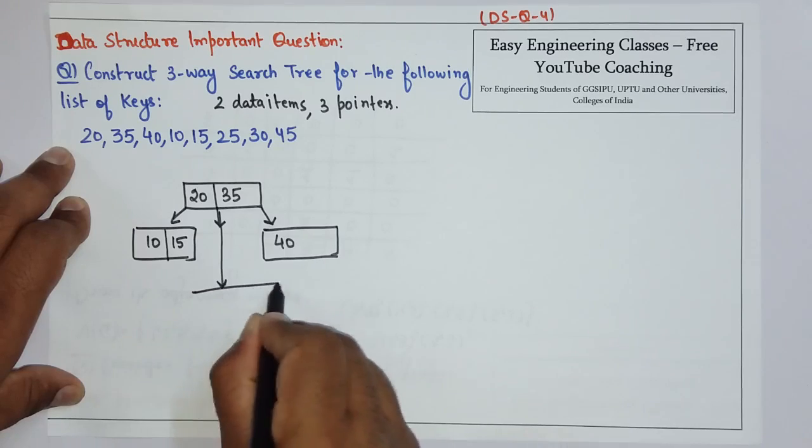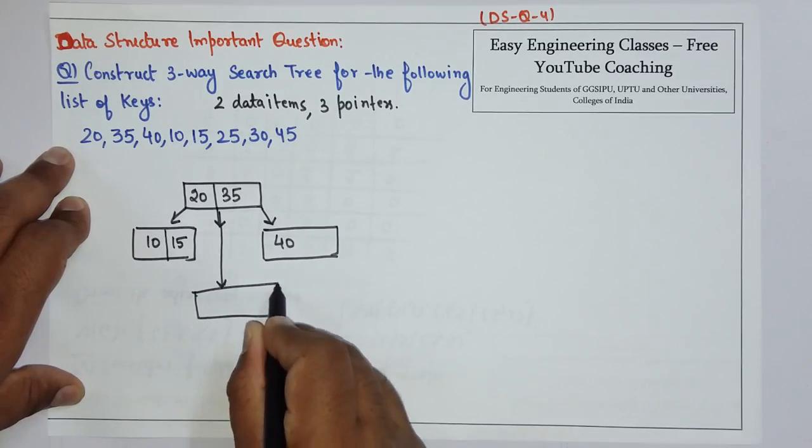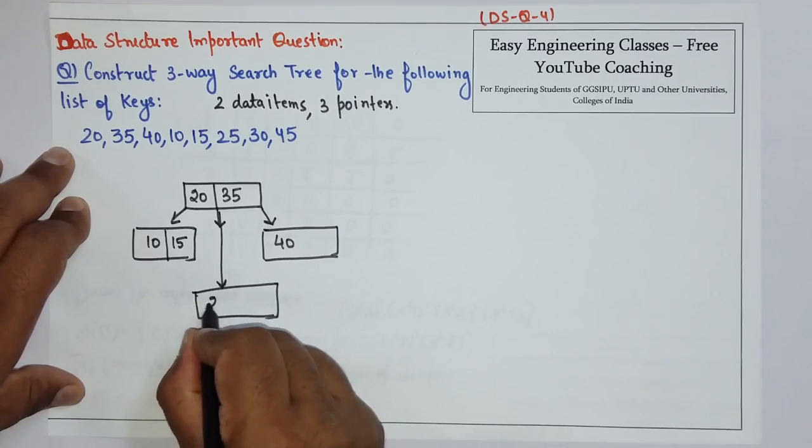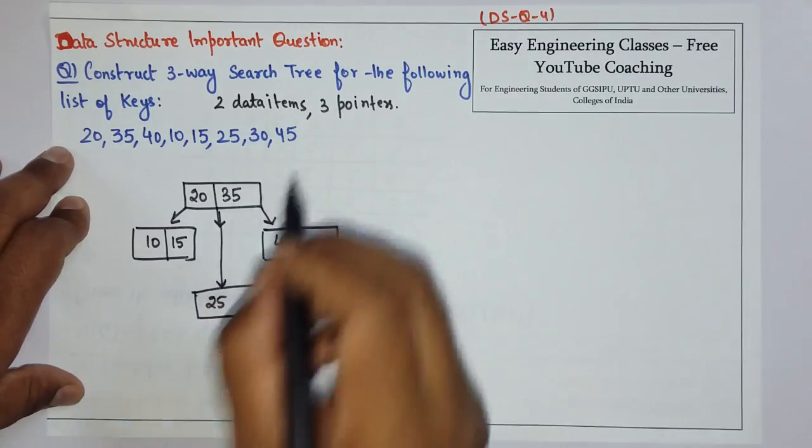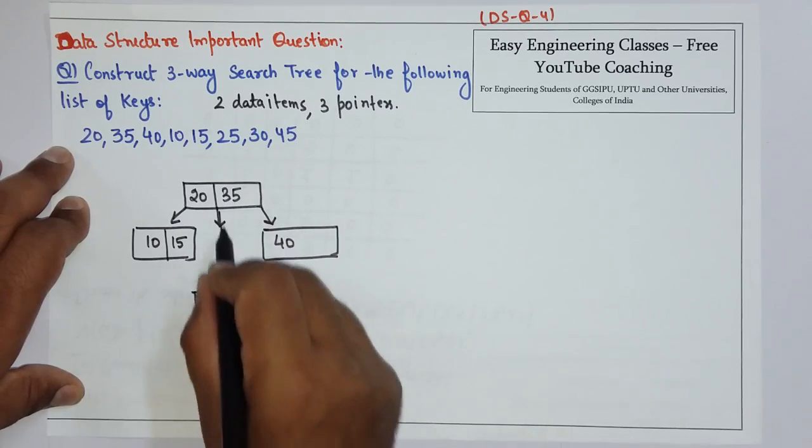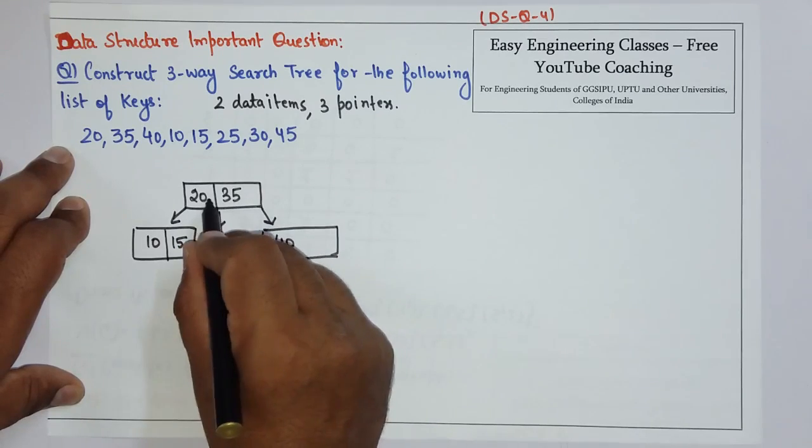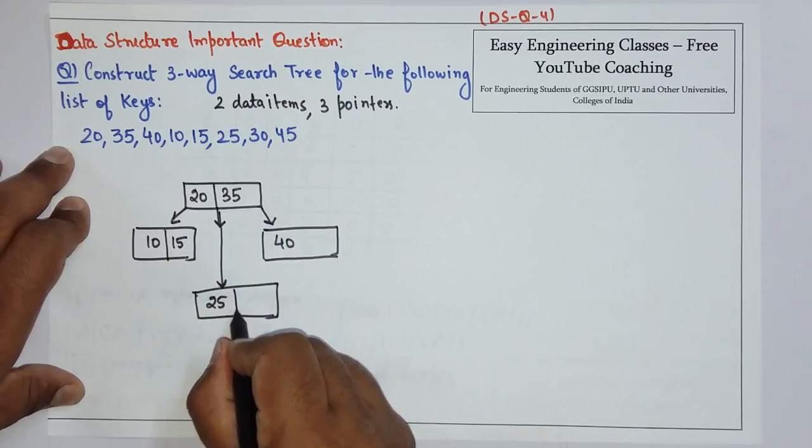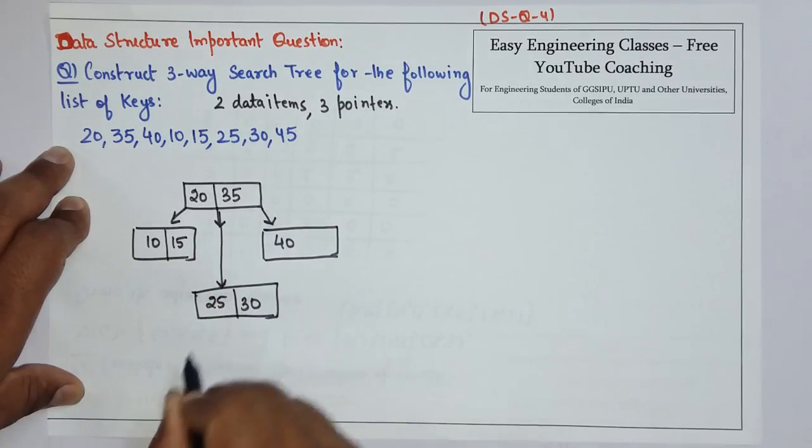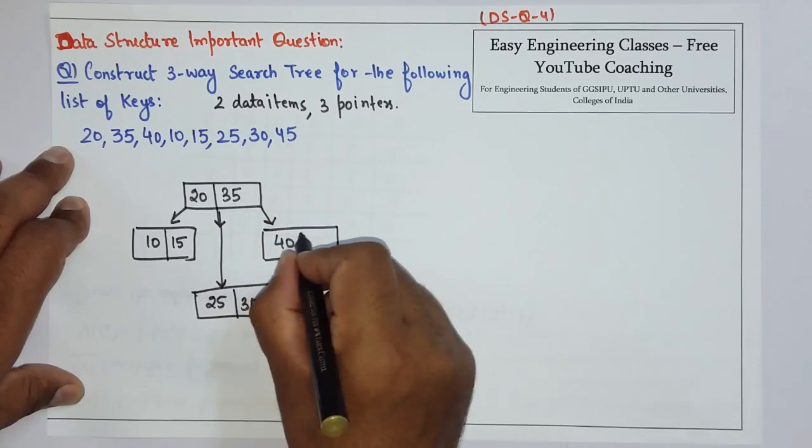Then comes 30. Since 30 is greater than 20 but less than 35 and greater than 25, it will be present here. Then 45 will go here.